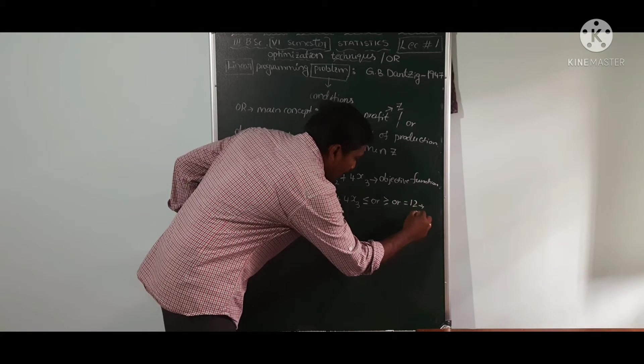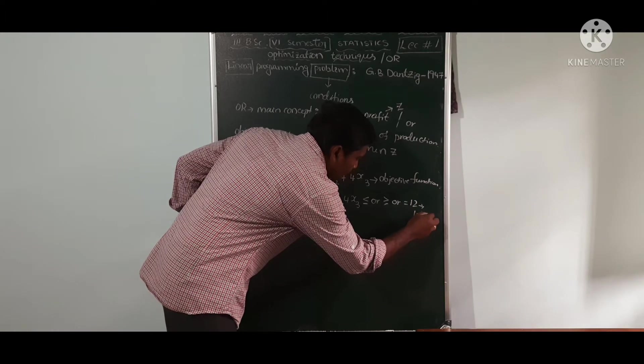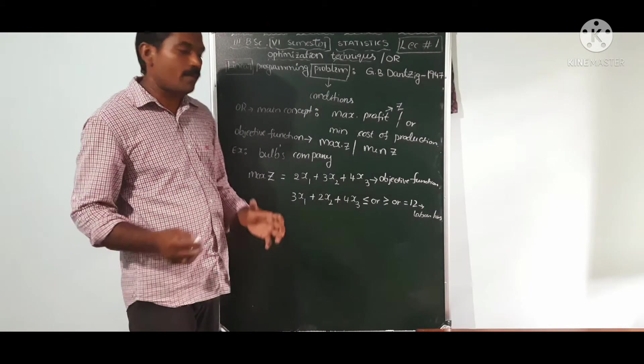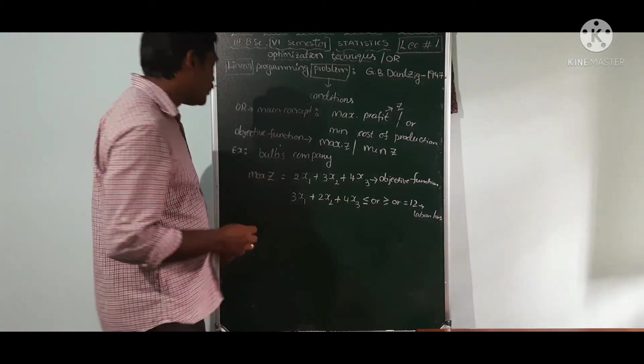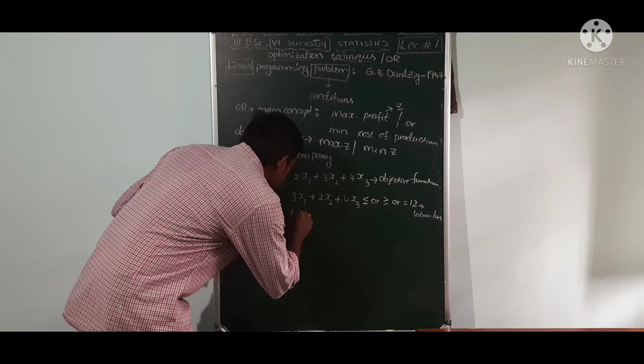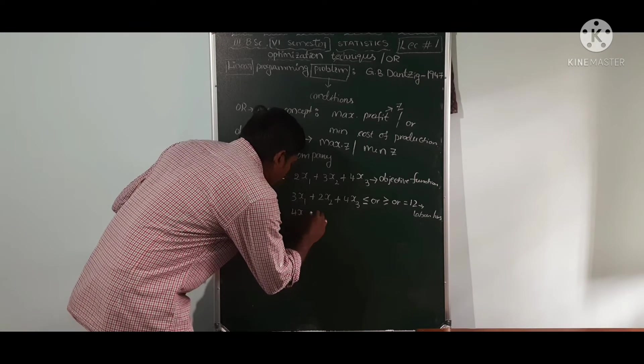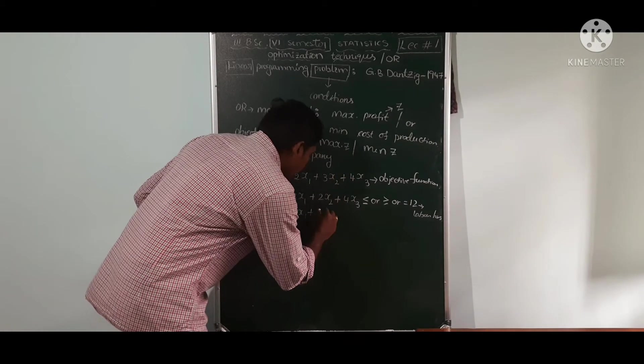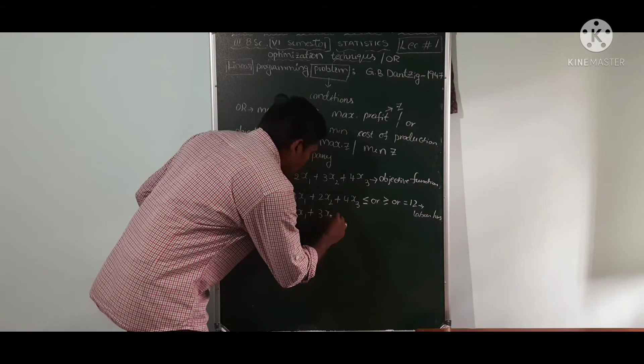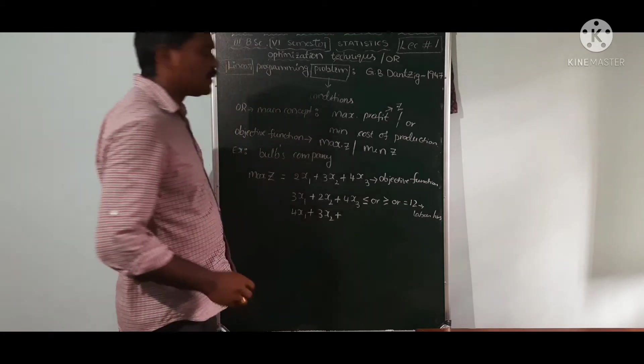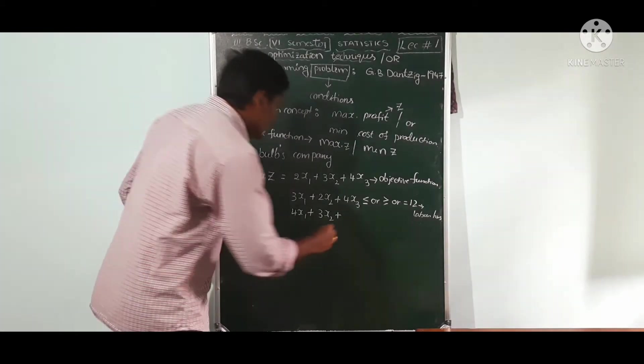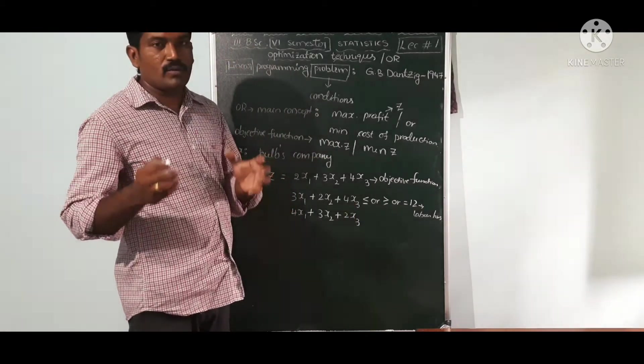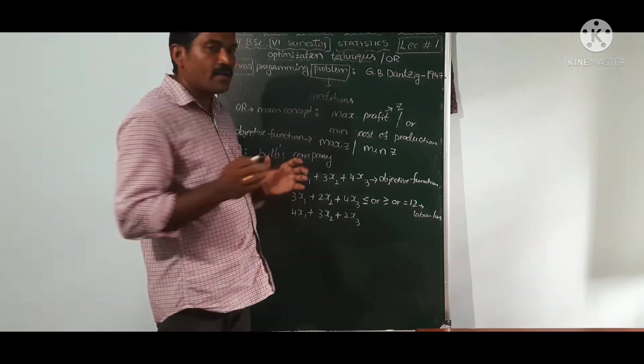This is the labor hours. The machine hours is 4 hours. The machine hours is 3x1 plus 3x2 plus 2x3. Machine hours is 2 hours, 2x3, machine hours is 10 hours. The machine hours will be 10 hours for each machine hour, that equal to 10.